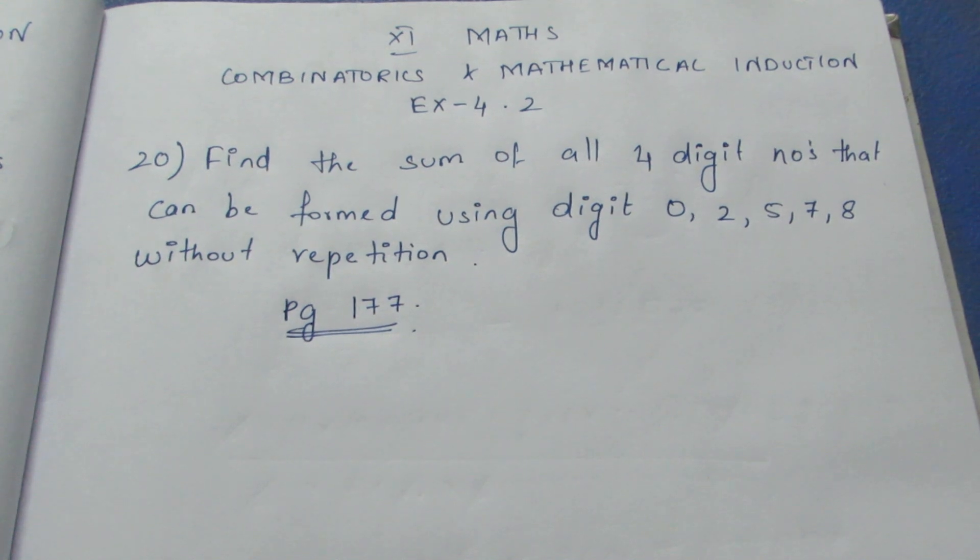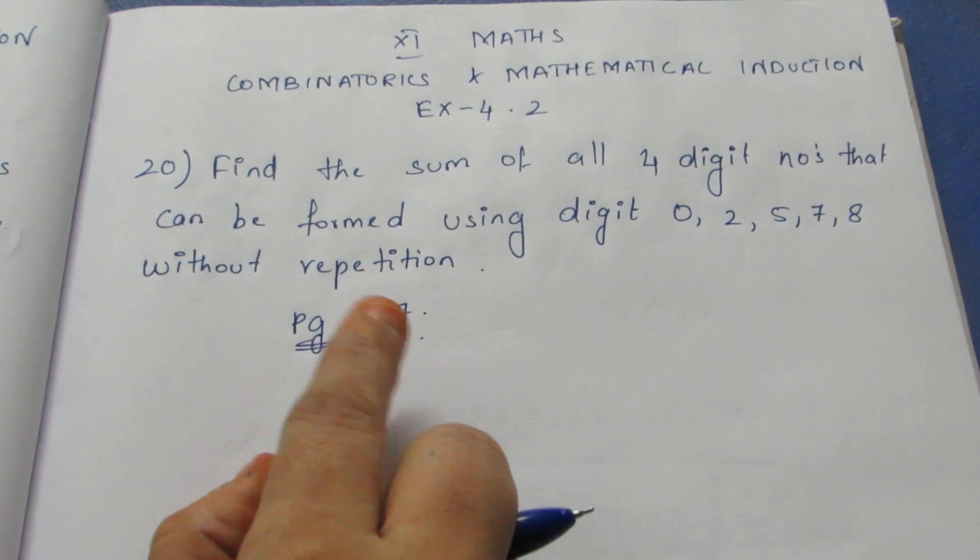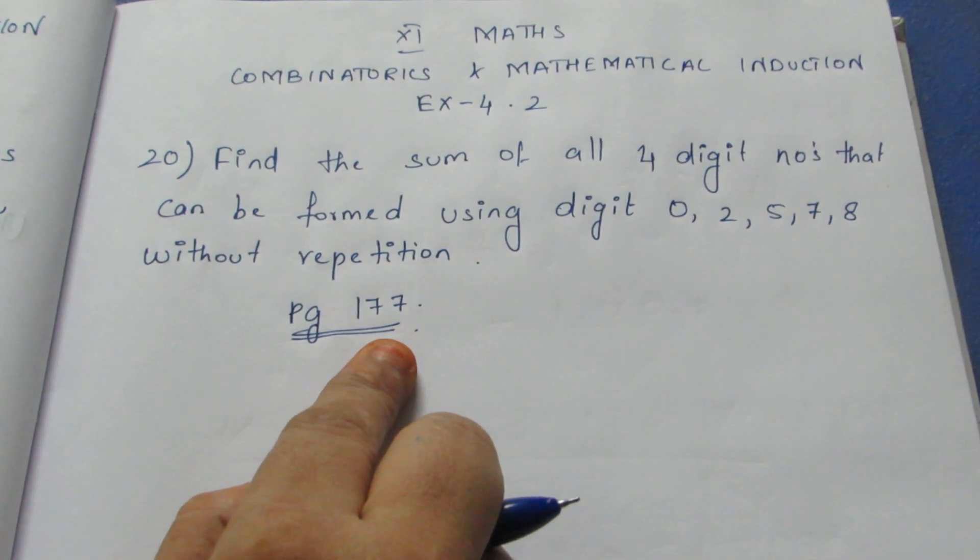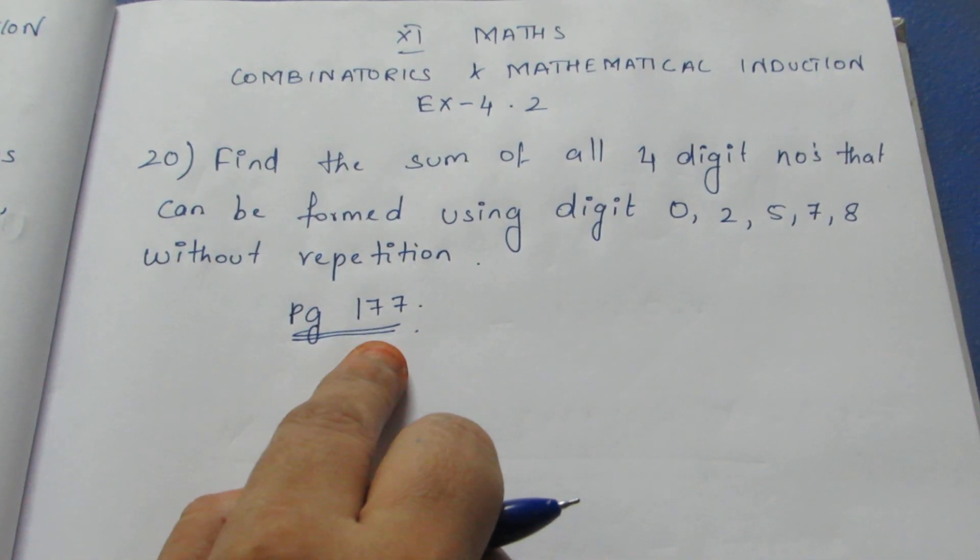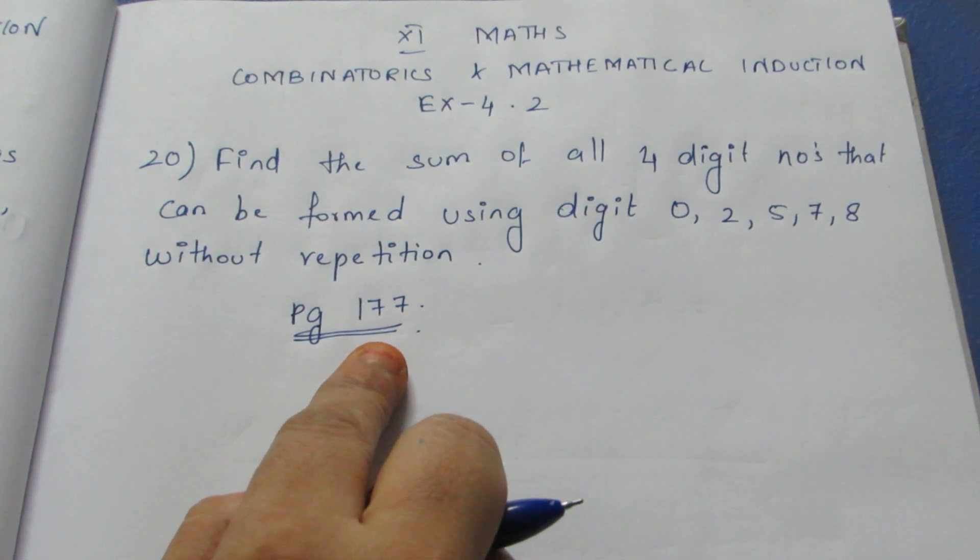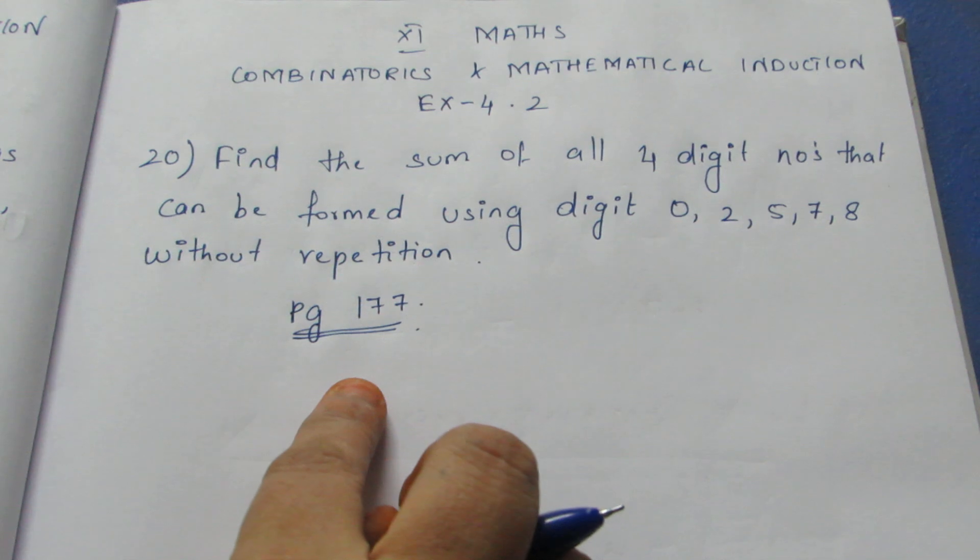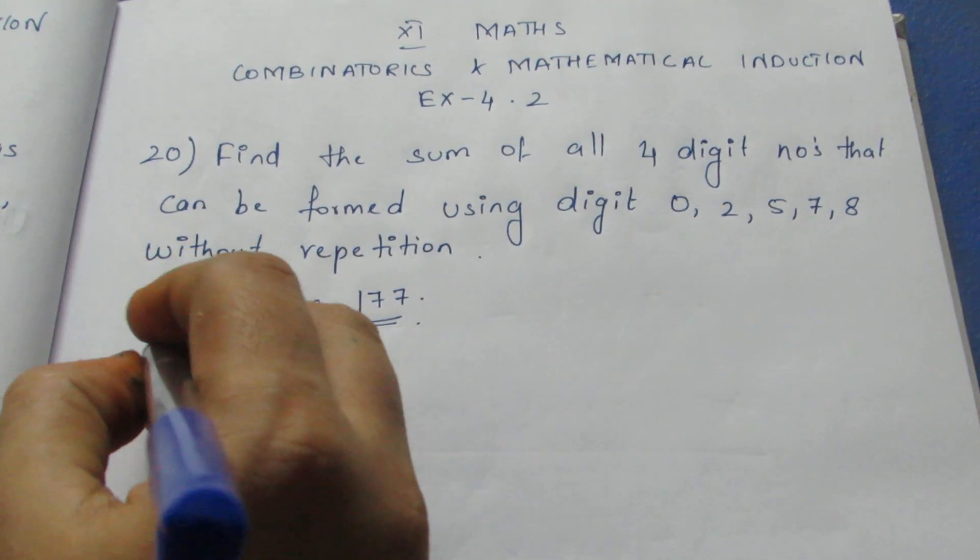In this model, I'll use the formula. In Section 4.2 on page 177, if 0 is included, there's a specific formula we need to use here. What is that formula?